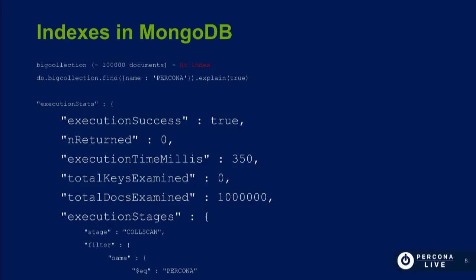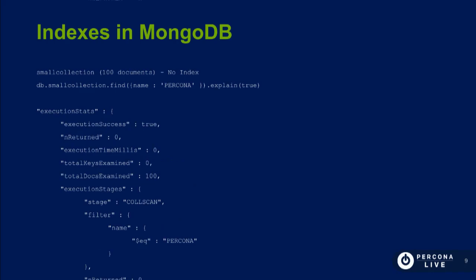If you have 1,000 queries running per minute, you are spending a lot of processor time, a lot of memory, and even disk I/O if the data doesn't fit in cache. With exactly the same query but only 100 documents, the execution time is 0 milliseconds because there are fewer documents to examine. So if documents are smaller it takes less time, but depending on the size of the document or the field you're filtering, it can take more than half a second.